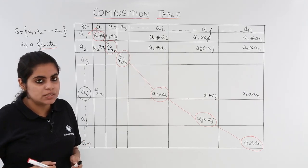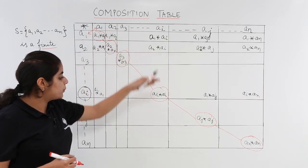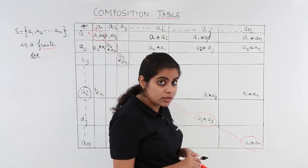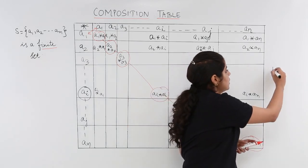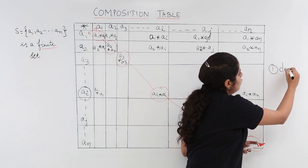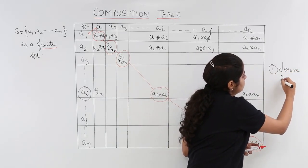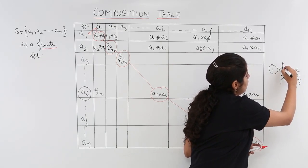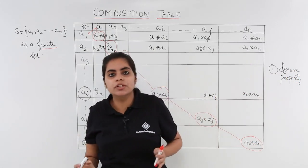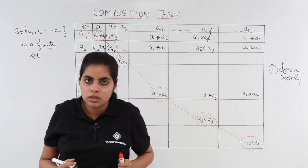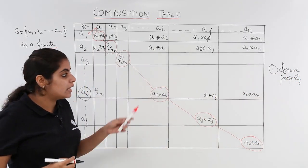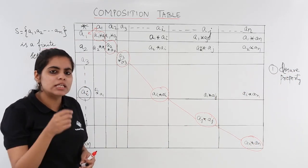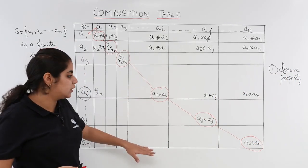What happens is from this composition table I can find out many things. I can find out first thing: is the closure property followed? Remember we studied about closure property in our very initial videos of binary operation. So closure property, how to check whether it is followed in this binary table or not? There is one very simple funda related to this.